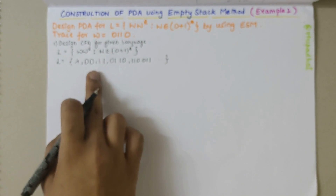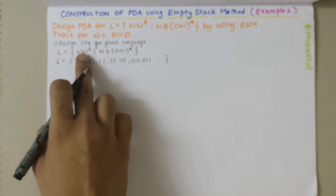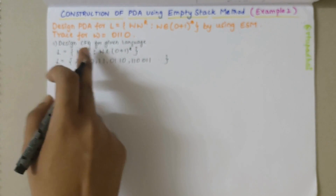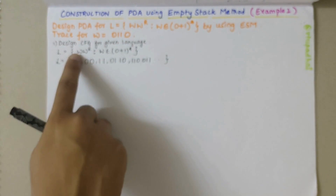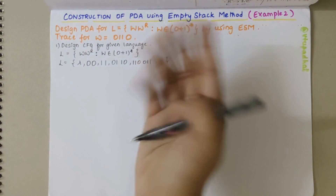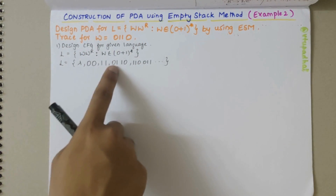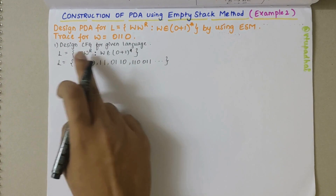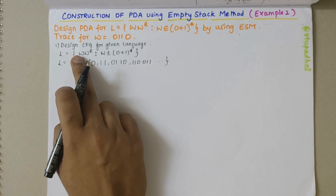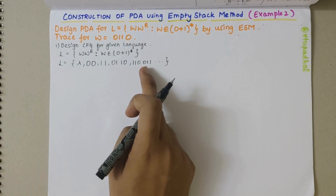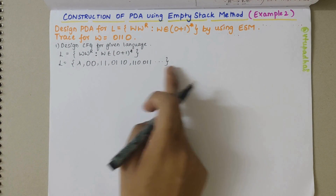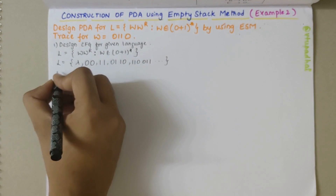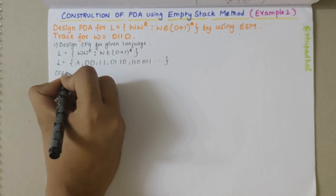So w·wR refers to a palindrome structure: if I put 0, on the opposite side it also has to be 0. If I put 1 it has to be 1. If I put 01, the reflection should be 0110, and if I put 110 it has to be 011, and so on. Now let me write the CFG for it.